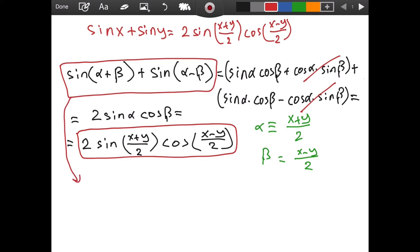And let's here also substitute for alpha and beta in terms of x and y and see what we get. So we have sine of x plus y divided by two plus x minus y divided by two, and then plus sine of...